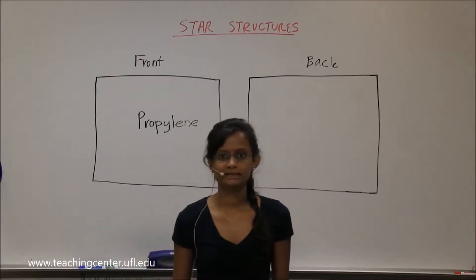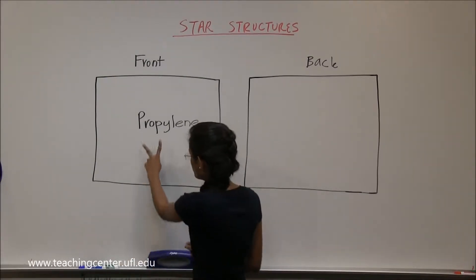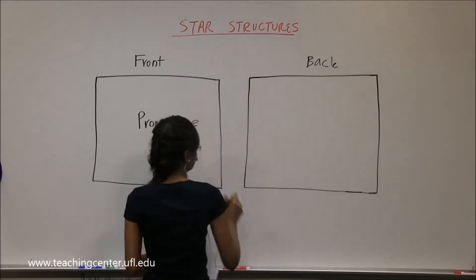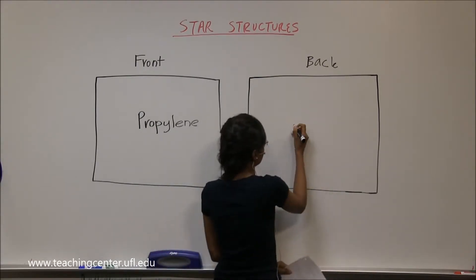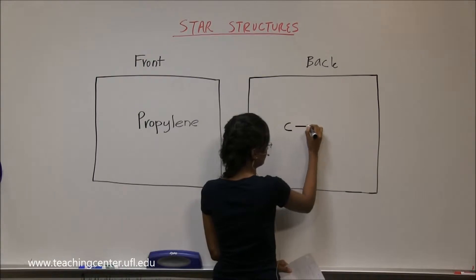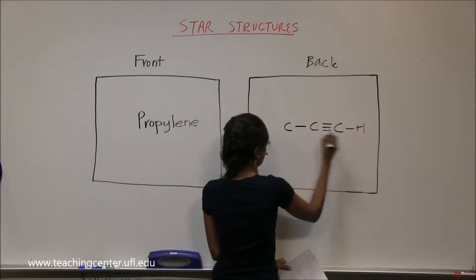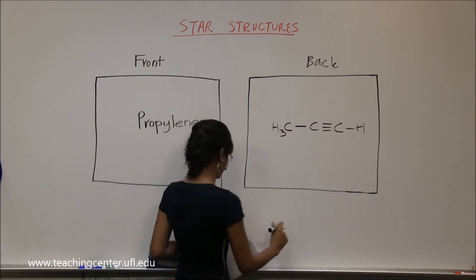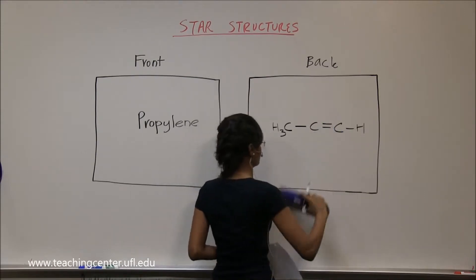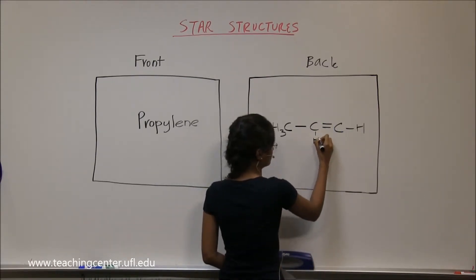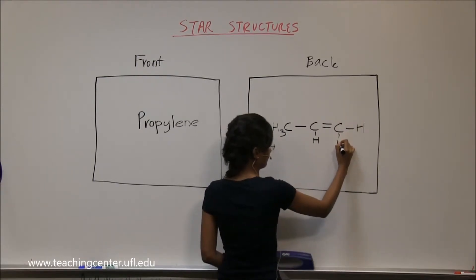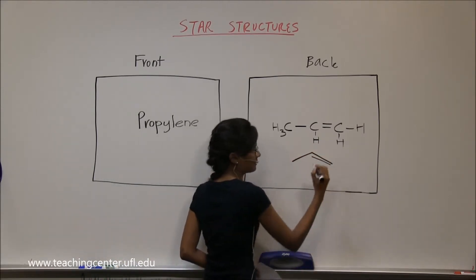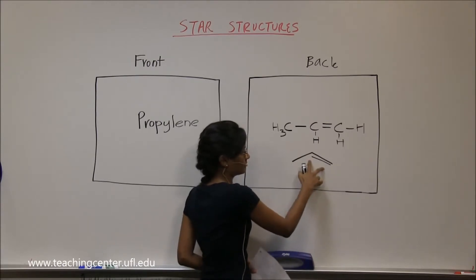Propylene is another structure. 'Prop' means three carbons, so we're going to have three carbons, and the ending is '-ylene.' This is propylene. When you draw it in line angle, it looks like three carbons with a pi bond between two of them.